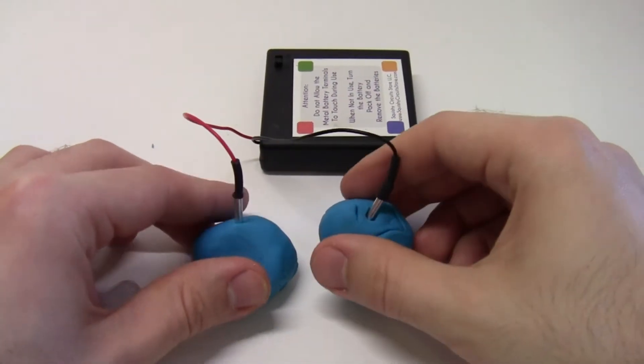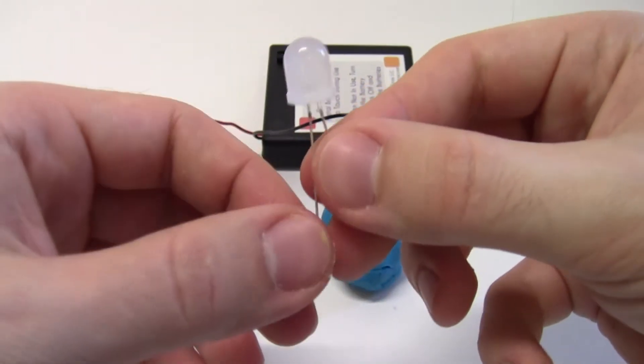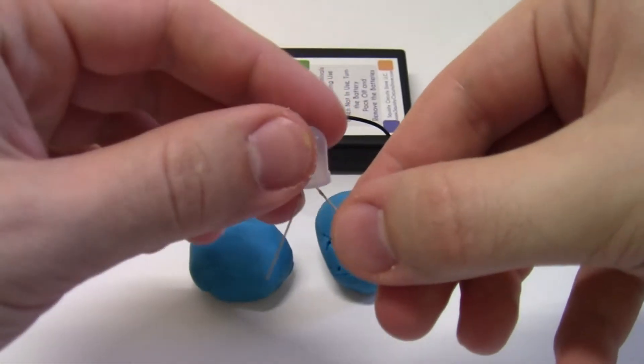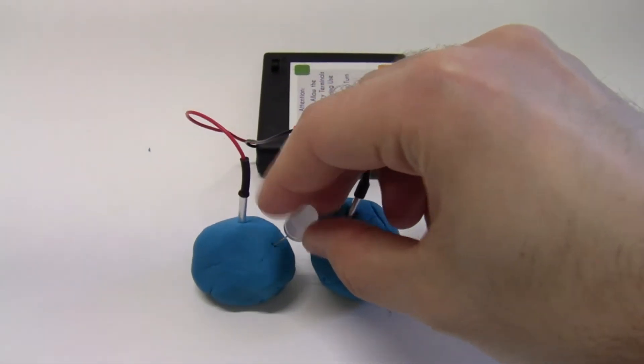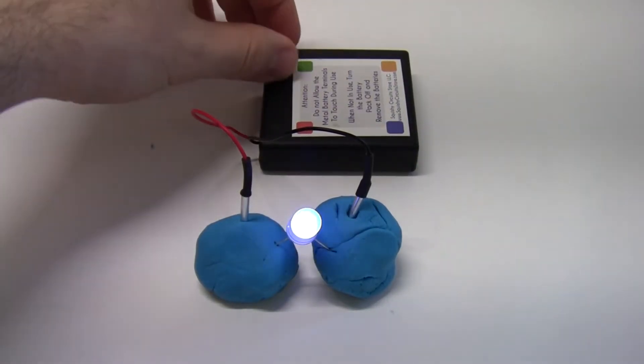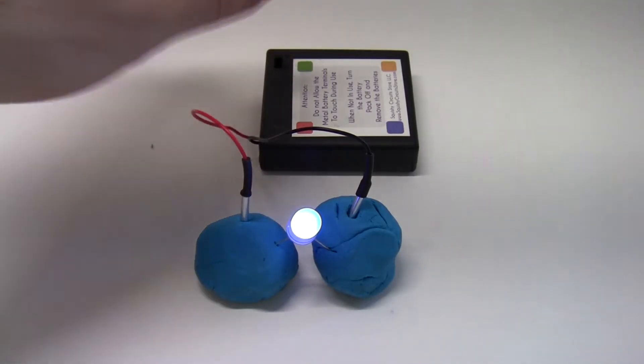Now take your lumps of Play-Doh and put them close together but not touching. Now take your LED, and remember the LED has two metal wires sticking out of the bottom called leads. Spread those apart slightly so you can press them into each lump of Play-Doh, again making sure that the lumps of Play-Doh don't touch. Now reach back and turn your battery pack on, and the LED should light up, and you have made your first squishy circuit.